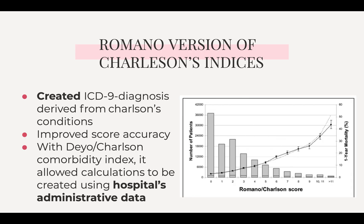Next, we have Romano's version of the Charlson's index, which came around the late 1990s and basically created ICD-9 diagnosis codes derived from Charlson's conditions — these are what we see today as ICD-9 diagnoses in the hospital. With this, they took all the conditions, put them into an online database, and were able to improve score accuracy within hospitals. On your right, you can see that the mortality rate is a little more precise. This allows calculations to be created just using the hospital's administrative data.